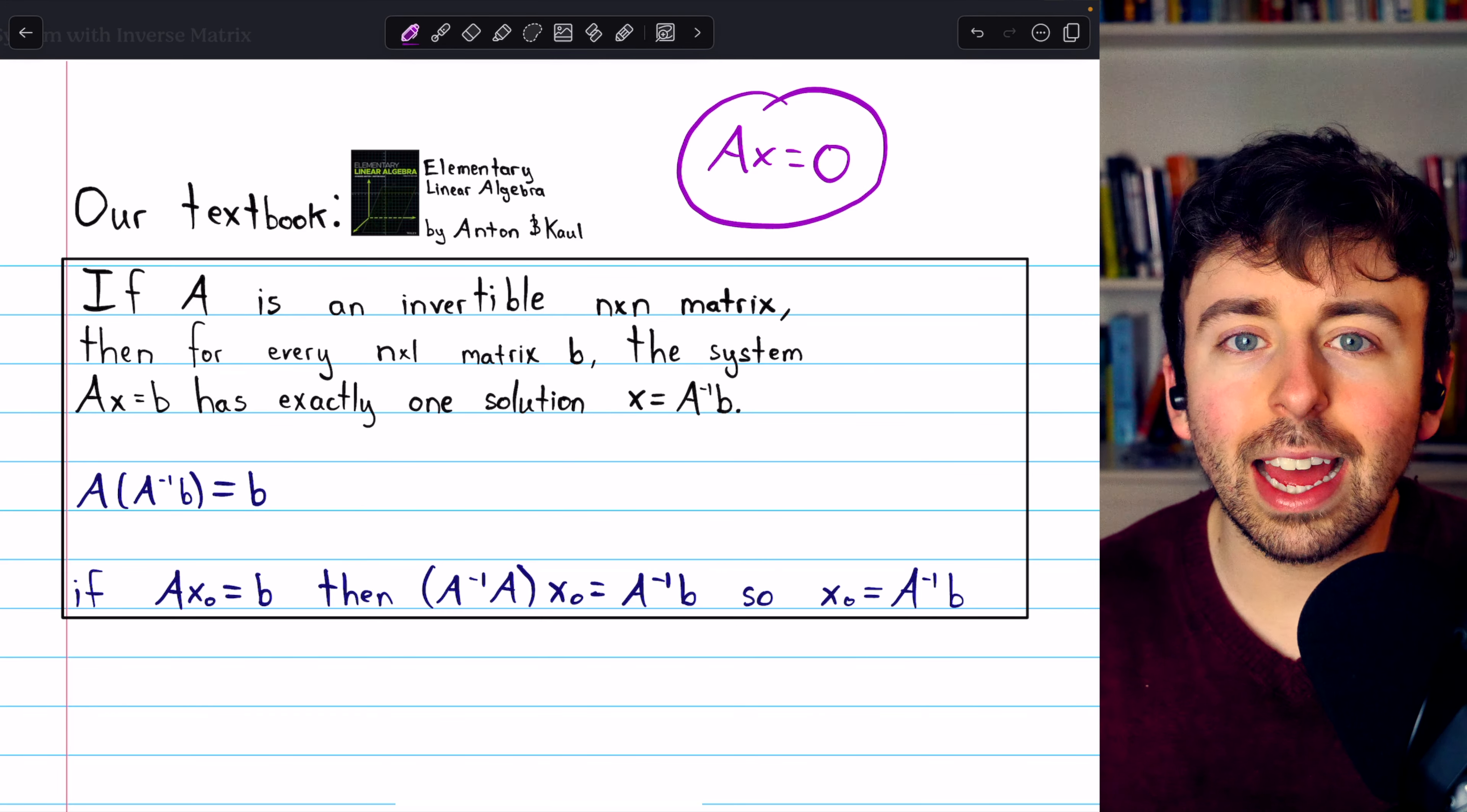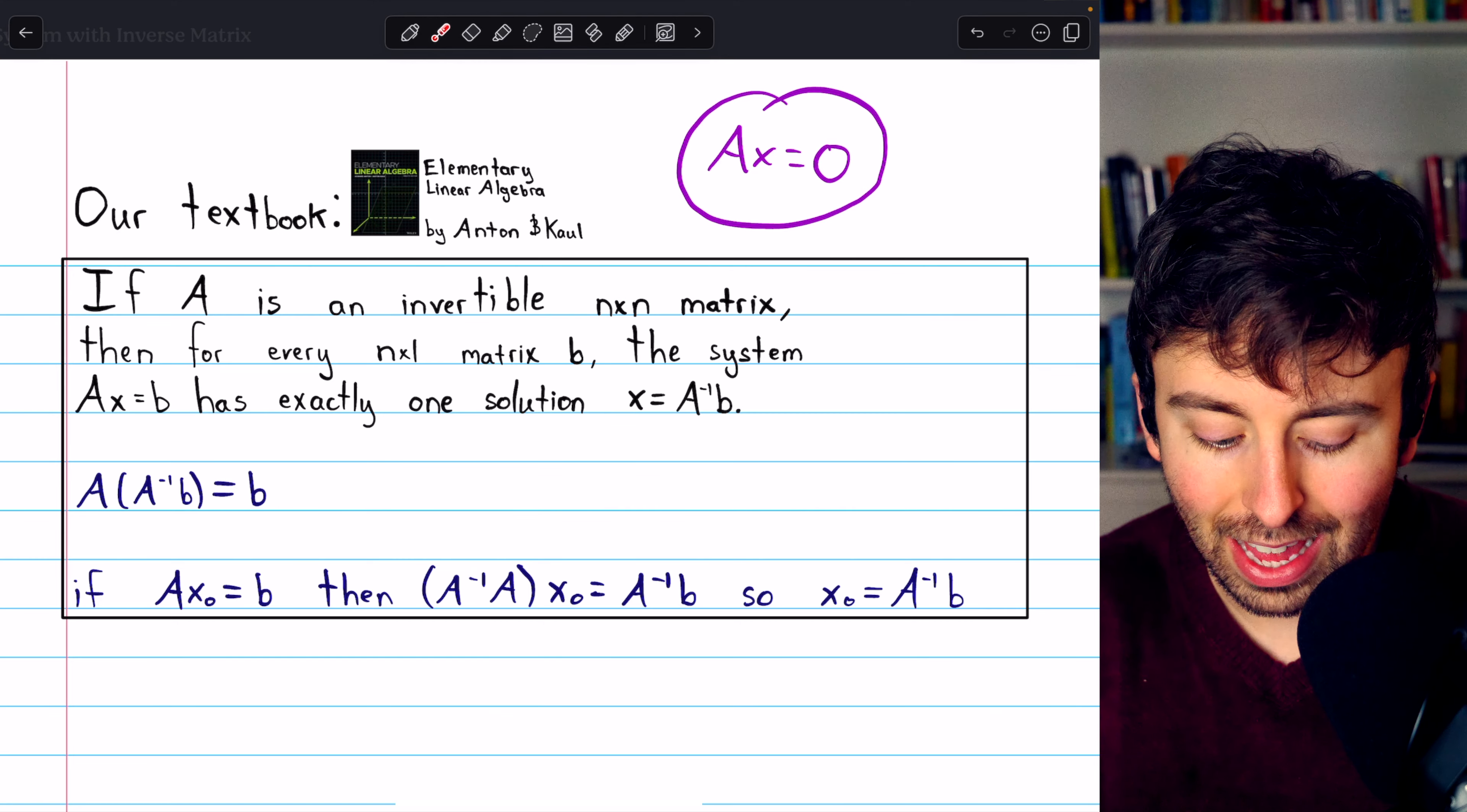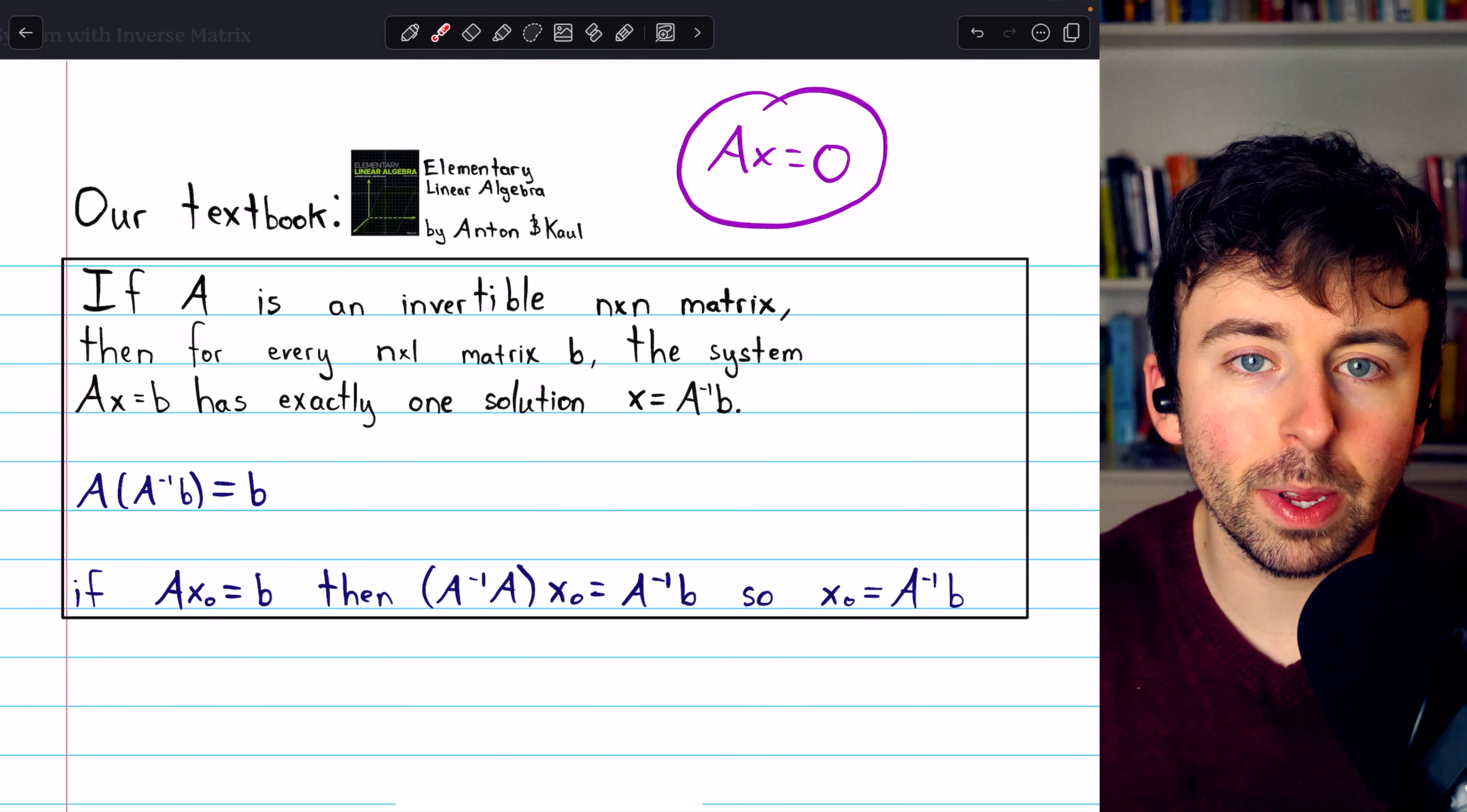But now that we understand how to find the inverse of a matrix, we can solve more general systems like this, non-homogeneous systems like Ax equals B.